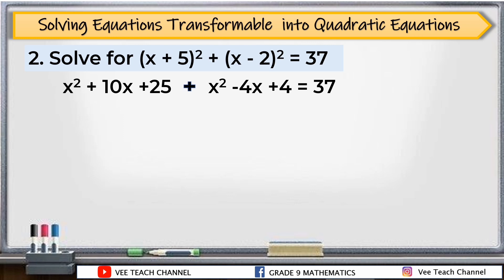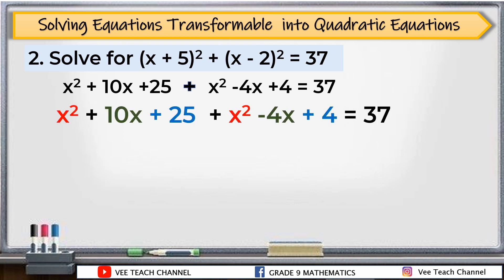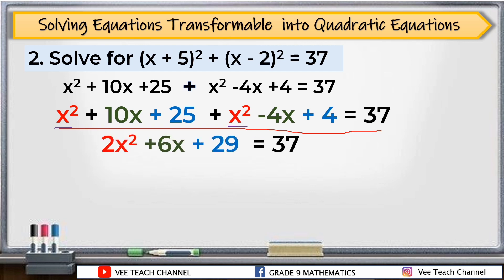Now it's time to simplify. You can notice there are similar terms — we need to combine them. When we combine: x squared plus x squared is 2x squared; 10x minus 4x is 6x; and 25 plus 4 is 29. So we have 2x squared plus 6x plus 29 equals 37.